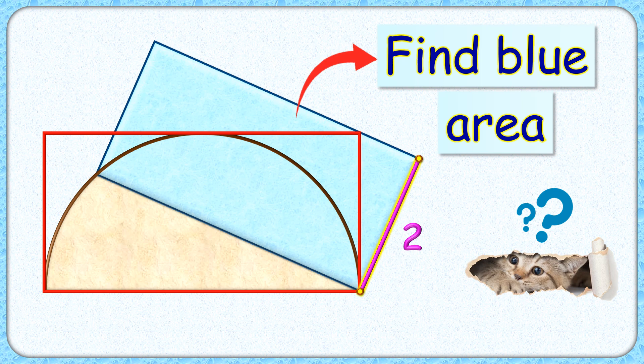Welcome everyone to this interesting question where given to us is a brown semicircle and a red and blue rectangle. The side length of this blue rectangle is 2 cm. The exciting part is with this limited data we have to find the area of this blue rectangle.